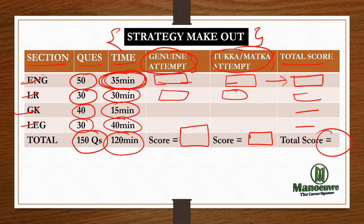This chart will help you to understand in which section you are scoring well and in which section you are not scoring well, and where you need to put in extra effort. Please pause this video, take a printout of this chart, and stick it on the wall where you study. This will help you understand the strong and weak areas of each section, and accordingly you have to improve.